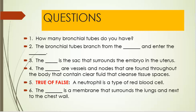Questions. Number one: how many bronchial tubes do you have? Number two: the bronchial tubes branch from the blank and enter the blank. Number three: the blank is the sac that surrounds the embryo in the uterus. Number four: the blank are vessels and nodes found throughout the body that contain clear fluid that cleanses tissue spaces. Number five: true or false — a neutrophil is a type of red blood cell. Number six: the blank is a membrane that surrounds the lungs and is next to the chest wall.